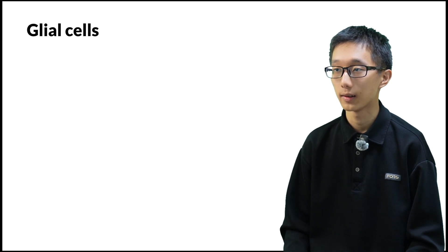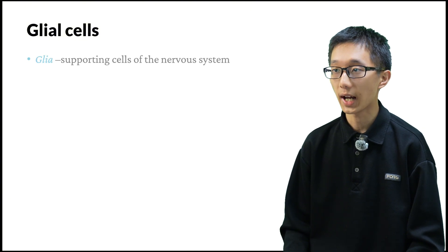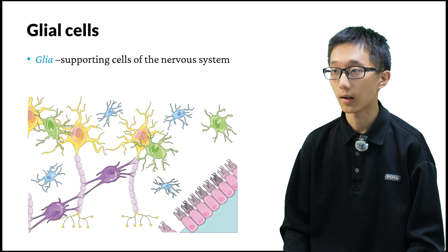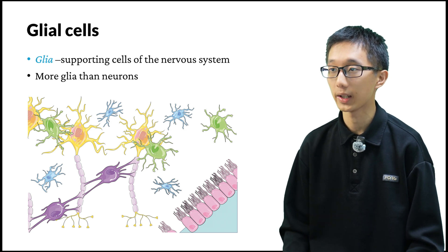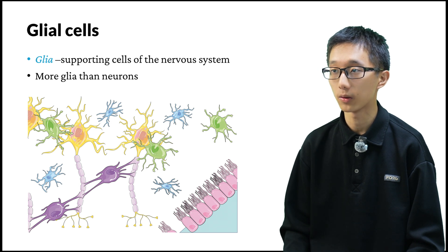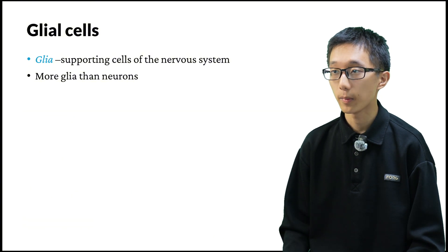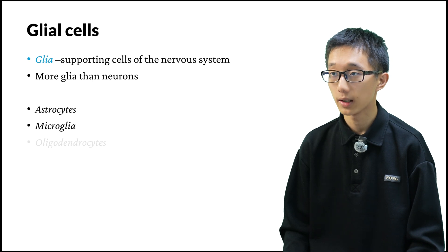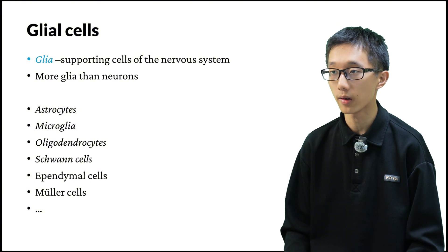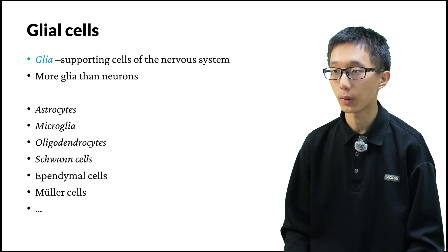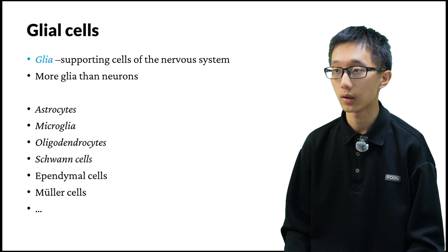It's time to talk about glial cells. Glial cells are the supporting cells of the nervous system. There are in fact more glia than neurons in the nervous system, so they're very important and are the target of a lot of neurological studies today. Some important types include astrocytes, microglia, oligodendrocytes, Schwann cells, ependymal cells, Mueller cells, and others. Some are only present in specific places — ependymal cells are only on the walls of the ventricles and produce cerebrospinal fluid, while Mueller cells are only in the retina and upkeep the function of photoreceptors.